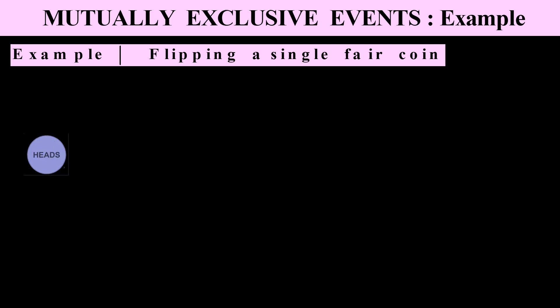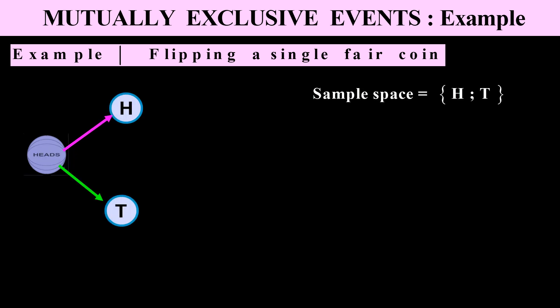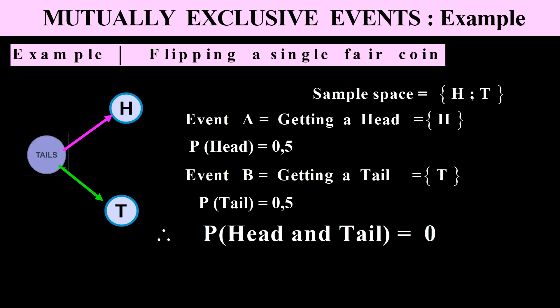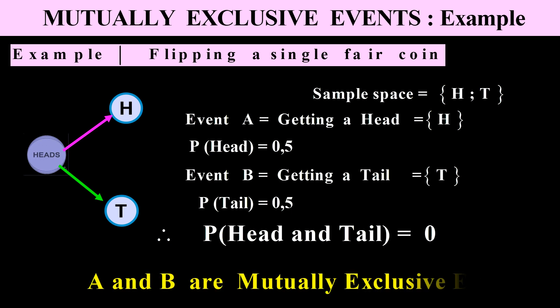Let's look at an example: flipping a single fair coin. If we flip a coin it can either land heads or tails. The sample space consists of heads and tails. Event A is getting a head, event B is getting a tail. P(A) = 0.5 and P(B) = 0.5. The probability of getting both a head and a tail is impossible, so P(A ∩ B) = 0, meaning A and B are mutually exclusive events.